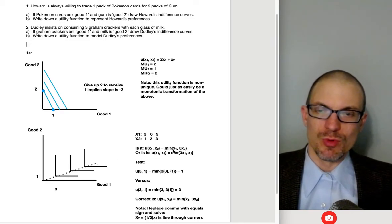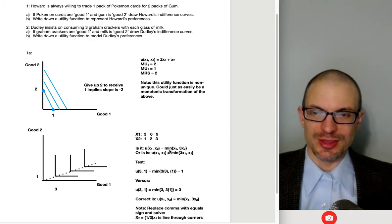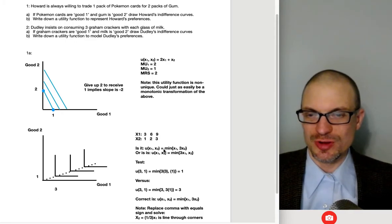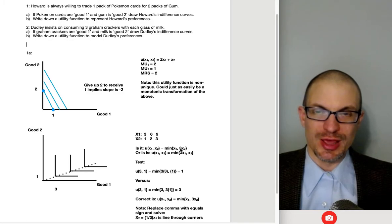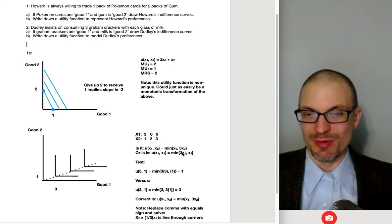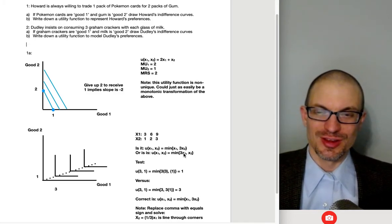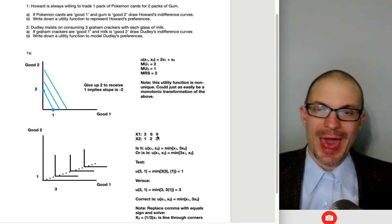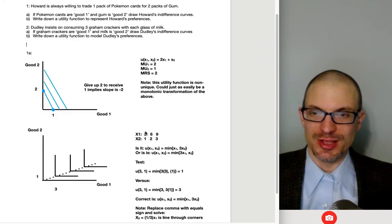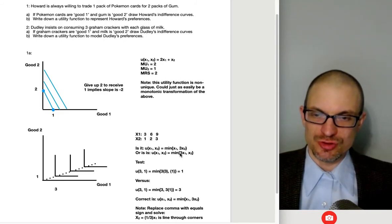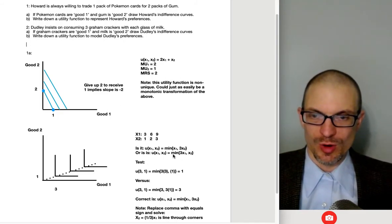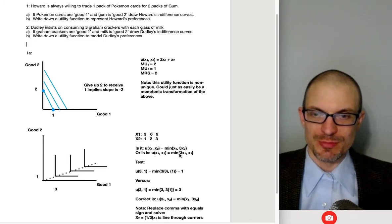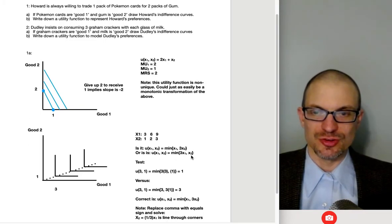So if Dudley's cool with like three graham crackers and one glass of milk, it's got to be fine with like six graham crackers and two glasses of milk or nine and three or whatever. So these are like all the bundles that Dudley's okay with. So now basically you're probably thinking about the type of utility function that's going to give us these preferences. And like more or less, you're probably going to be thinking about something like this. So your question is really like, should it be minimum of X1 and three X2, or should it be minimum of three X1 and X2?